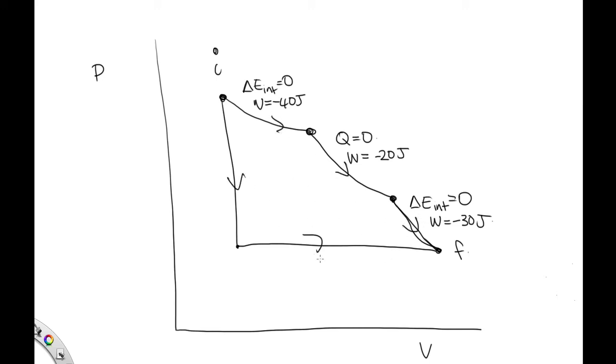And we're asked to find the change in internal energy. Well, since the change in internal energy doesn't matter if we use path one or path two, let's use path one. We've got the internal energy for this step and for this final step here. We can get it easily for this step using our first law of thermodynamics.